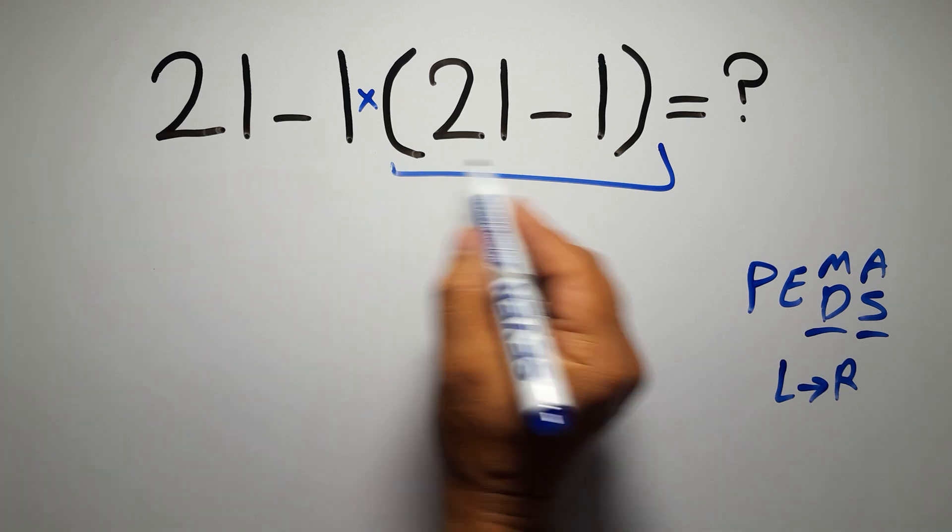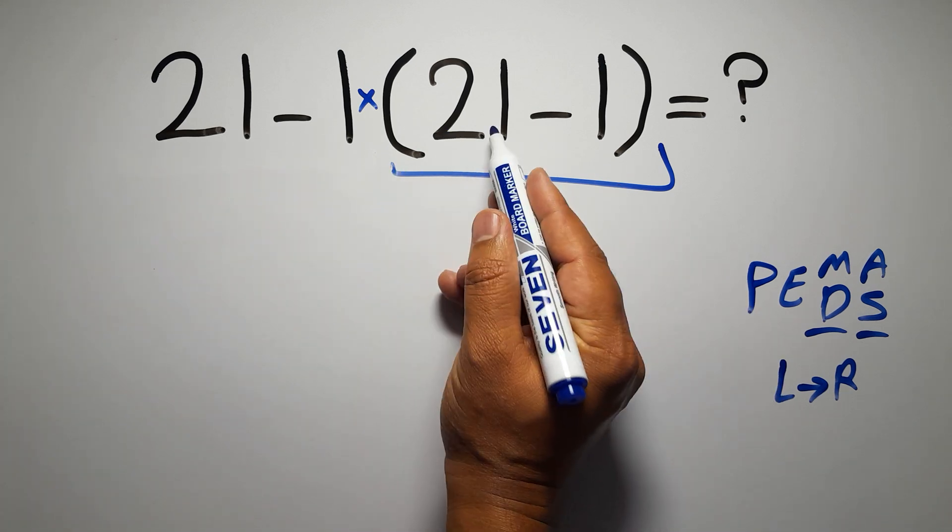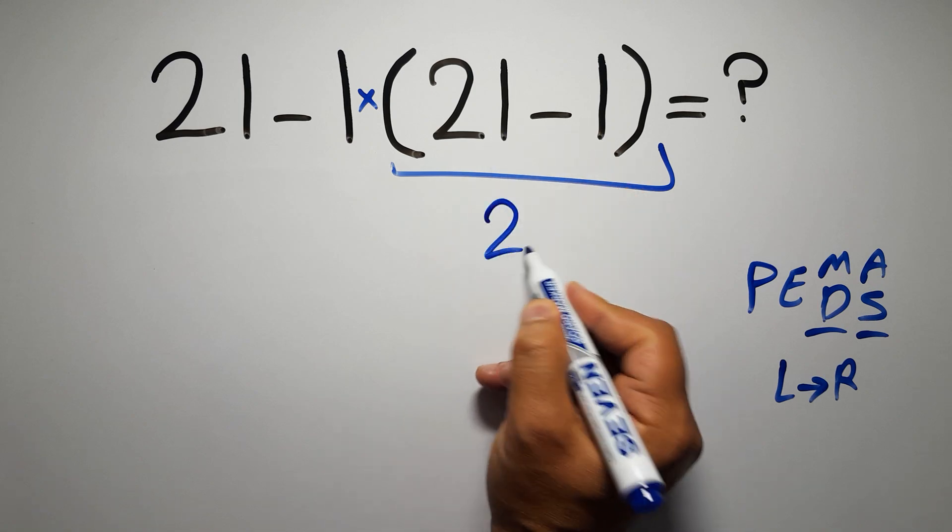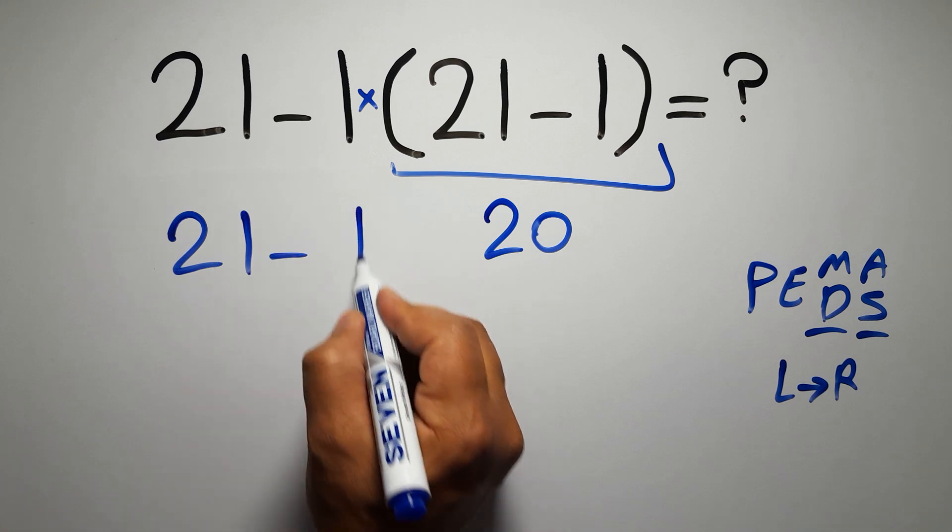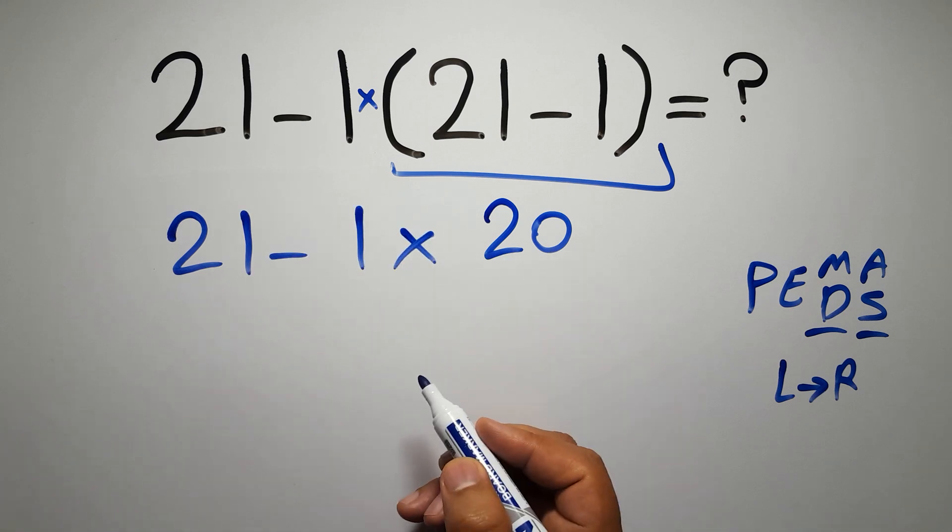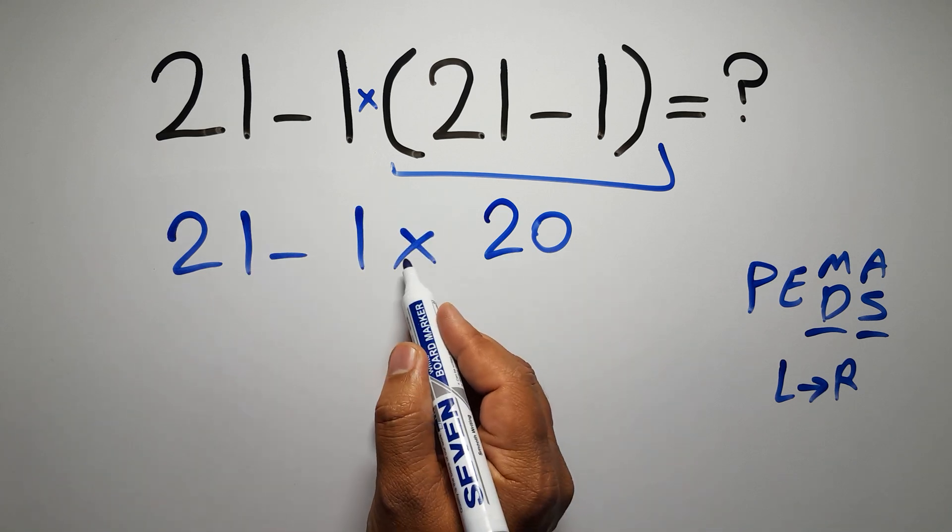So first this parentheses: inside this parentheses we have 21 minus 1, which gives us 20. So 21 minus 1 times 20. Now we have one subtraction and one multiplication.